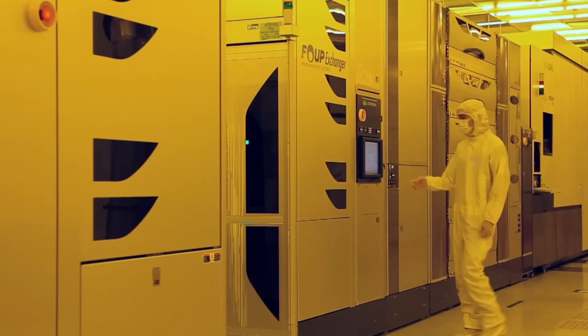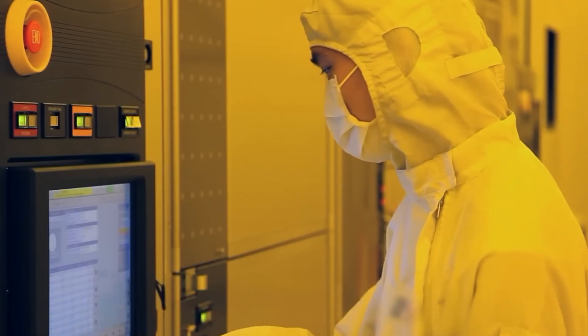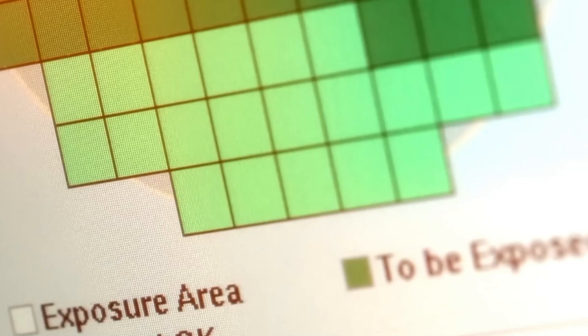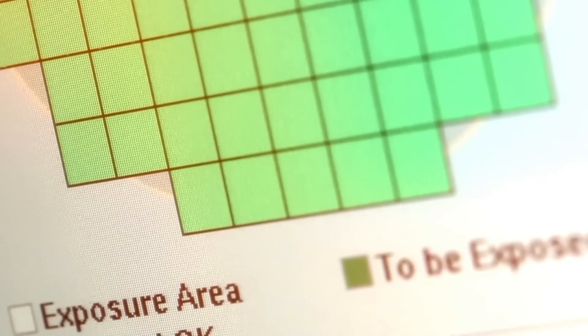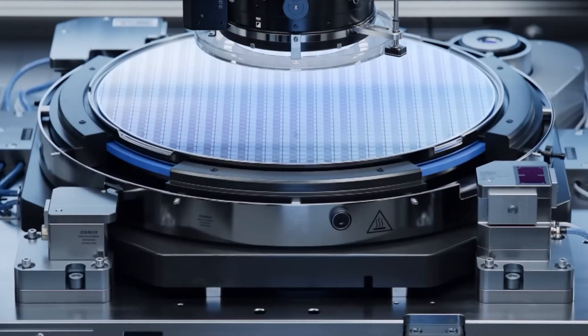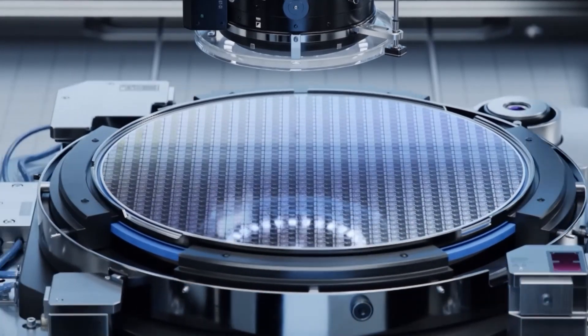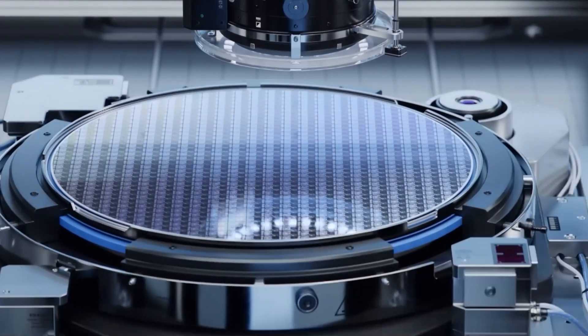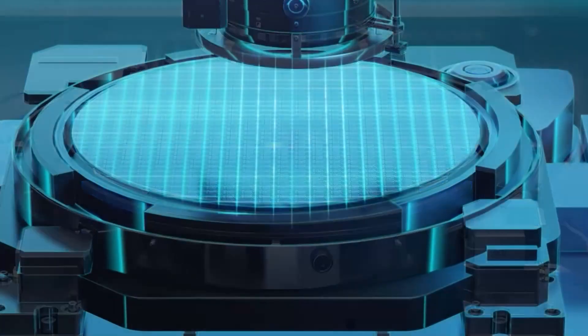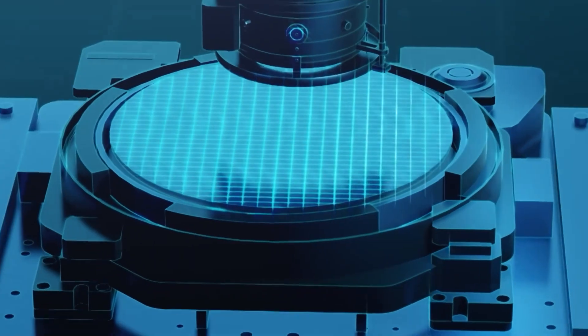Imagine trying to draw an entire city's map on a grain of rice. Now, shrink that down even further, and you'll start to understand the scale of complexity. A single TSMC fab can produce thousands of these wafers, each containing hundreds of NVIDIA chips with absolute consistency.